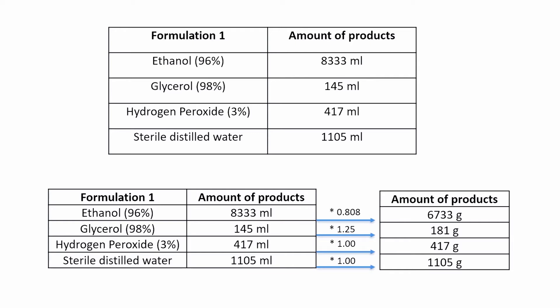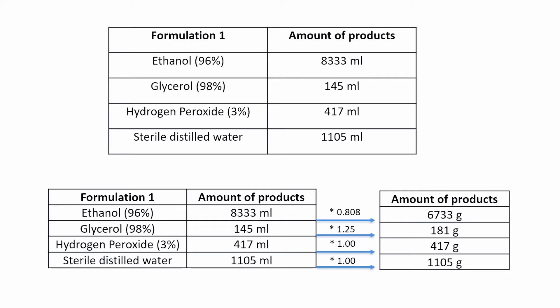It should be noted that it is possible to prepare more or less than the 10 liters suggested. This can be done by proportionally adjusting the quantities of raw material as shown in the attached document. In addition, in the case that only reagents with different concentrations are available or if it is needed to measure the quantities by weight, you can refer to the attached document.